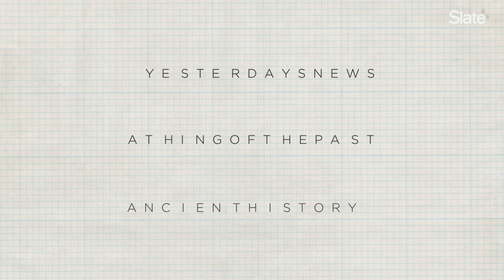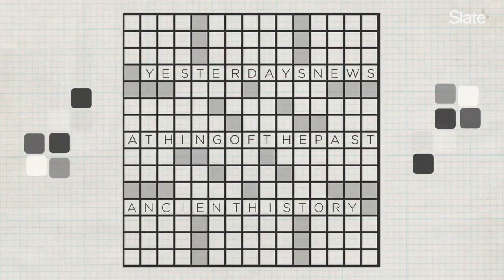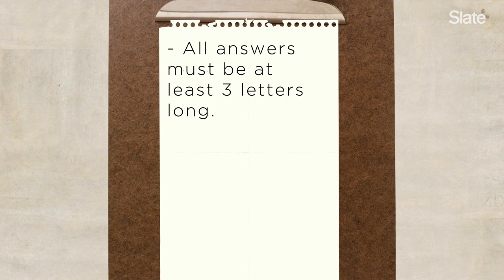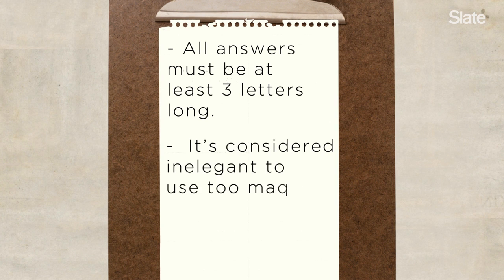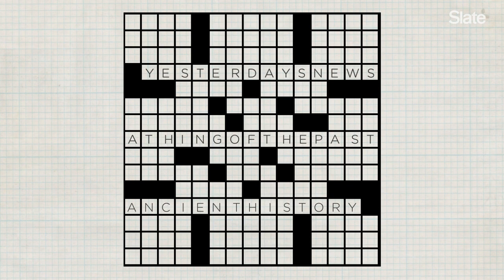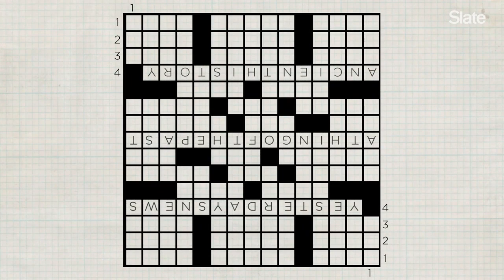Let's go back to that first example. Now that I have my theme in place, I need to build out the grid — that is, create a pattern of black squares. You could choose any pattern you want, as long as you observe one written rule: all answers must be at least three letters long, and one unwritten rule: it's considered inelegant to use too many black squares. Here's the pattern I chose. Rotational symmetry dictates that if I put a black square four rows from the top and one column from the left, then I have to put a black square four rows from the bottom and one column from the right. The result is that if you rotate the grid 180 degrees, it looks the same.